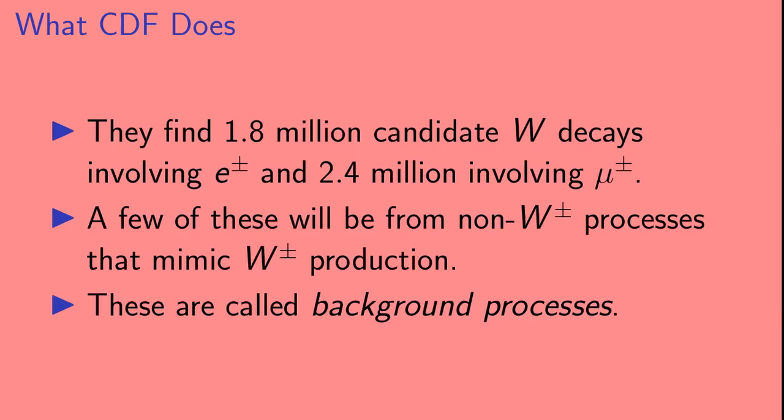CDF finds 1.8 million candidate W decays involving electrons, and 2.4 million involving muons. A few of these will not be genuine W events. Instead, they will be from non-W processes that mimic W production. These latter processes are called background processes and have to be taken into account in the analysis.